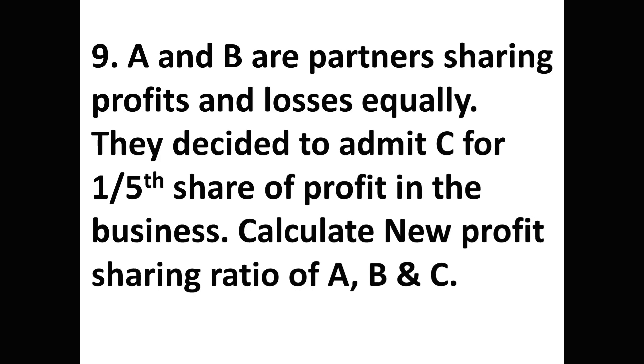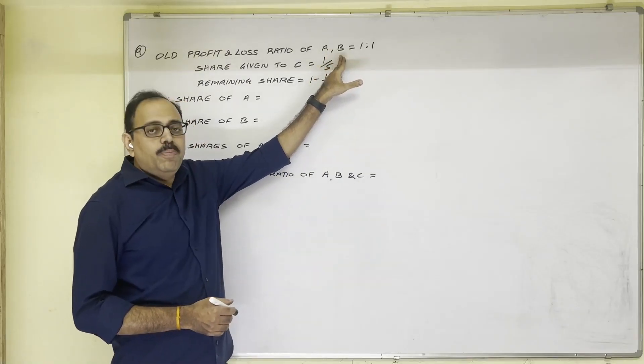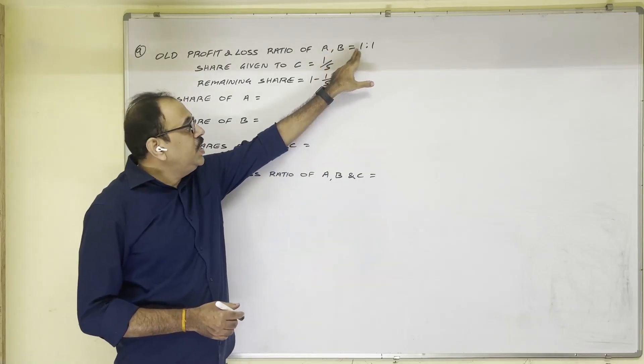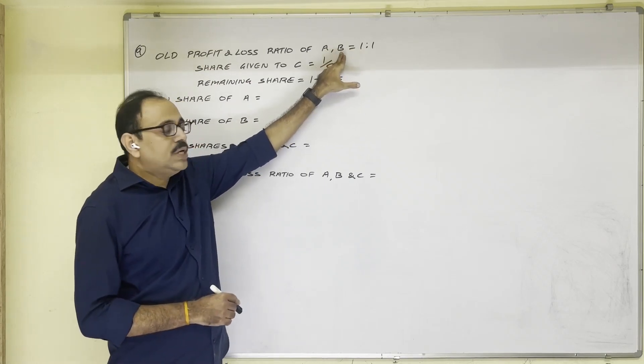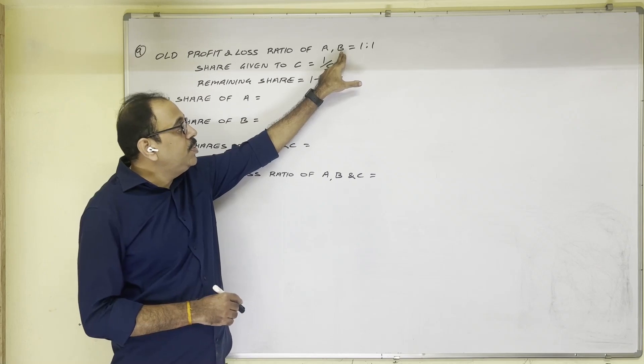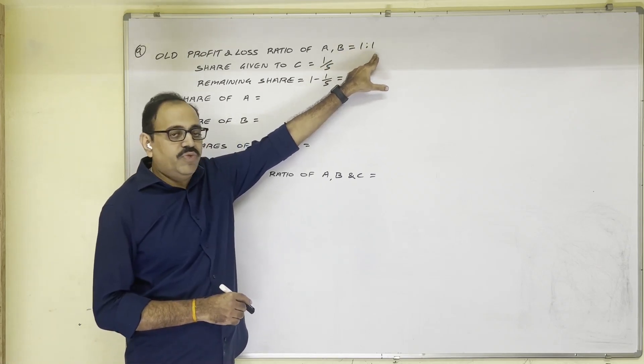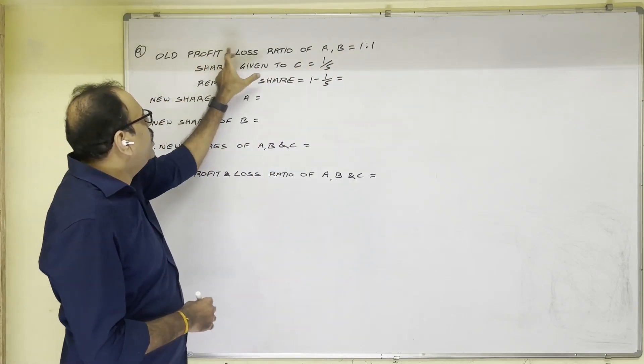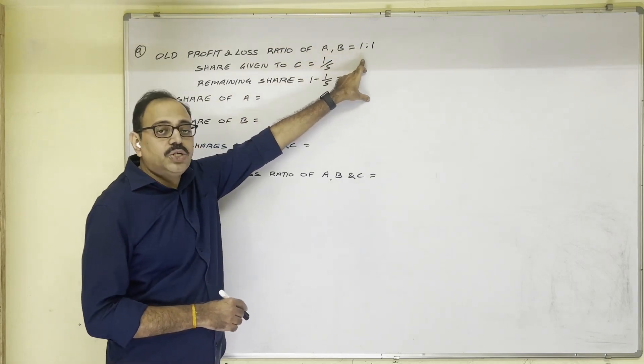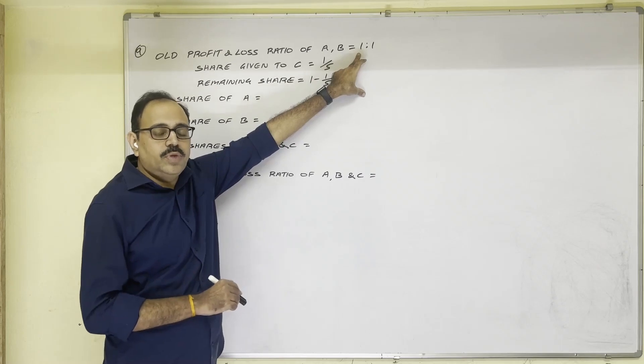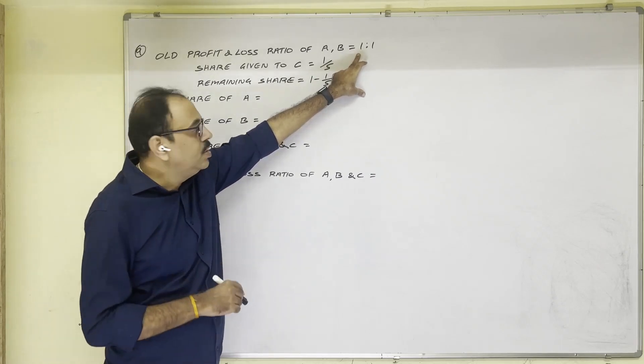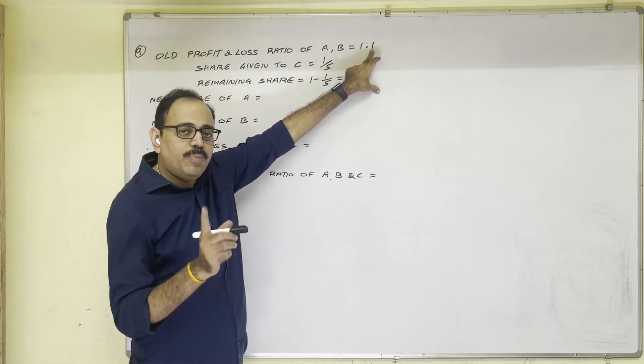Let us see the solution for this. A and B are old partners. They are sharing profits and losses equally. So two members are there. Therefore equally means old ratio is 1 is to 1. So old profit and loss ratio of A and B is equal to 1:1. So A's share is 1/2. How 2 came? 1 plus 1. B's share is 1/2.